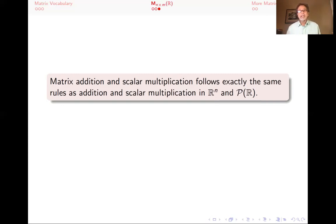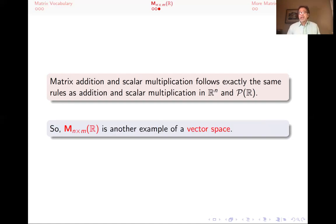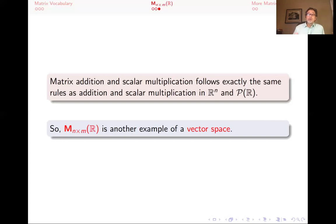As mentioned in a previous lecture, whenever you have a vector space, all the elements in it are called vectors. So when you think of matrices as a vector space, their elements — meaning the matrices — can be called vectors. To summarize, M sub n by m of R is another example of a vector space: the set of all n by m matrices with real entries. We're collecting these examples so that if we prove something about vector spaces, it will apply to all of them.